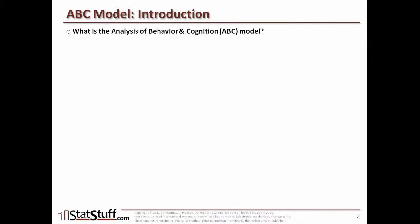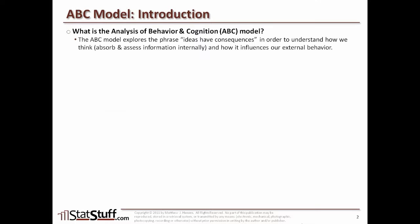The ABC model refers to the Analysis of Behavior and Cognition model. The model explores the idea of consequences and looks at how we think — that is, absorbing and assessing information internally in our minds — and how that way of thinking influences our external behavior. It also helps us understand the assumptions we're making that could significantly affect how we do data analysis.